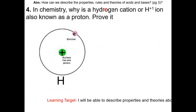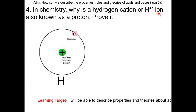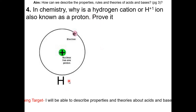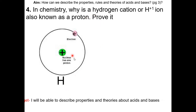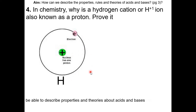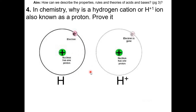Acids and bases react with each other to form salt and water. What is a salt? A salt is an ionic compound. In chemistry, why is a hydrogen cation, or H+ ion, also known as a proton? A typical hydrogen atom only has a proton and an electron, so when it loses an electron to become an H+ ion, it only has a proton. Therefore, a hydrogen cation is also known as a proton.